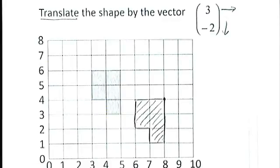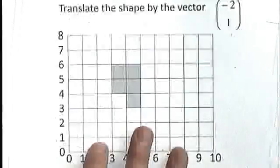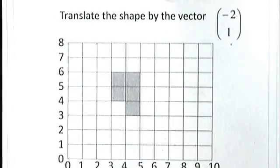I've got a couple of other examples just to show you very quickly using different vectors, just hopefully getting you used to using the vectors. Here's another one. The same shape, but we're going to translate it differently this time. We're going to translate it by the vector minus two, one.